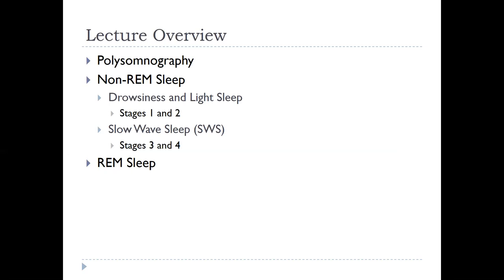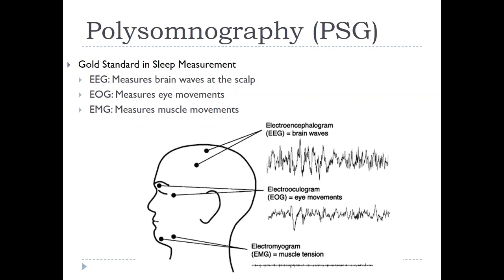The best way to measure what type of sleep you're in and what stage is using polysomnography, or PSG. We have EEG, which measures the brain waves; EOG, which measures the eye movements; and EMG, which measures muscle movements.